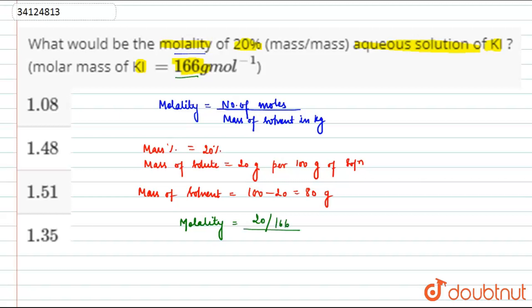Divided by mass of solvent. Mass of solvent is 80 grams divided by 1000 to convert this into kilograms.